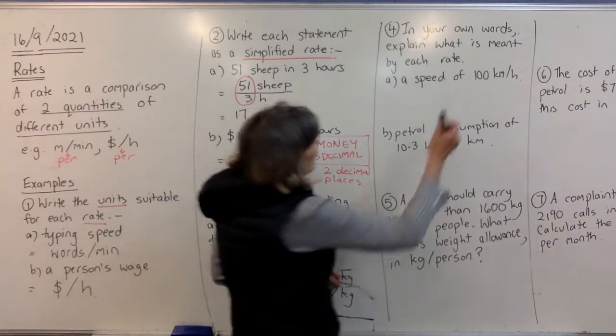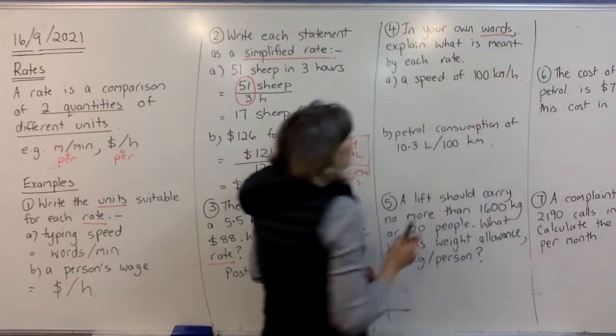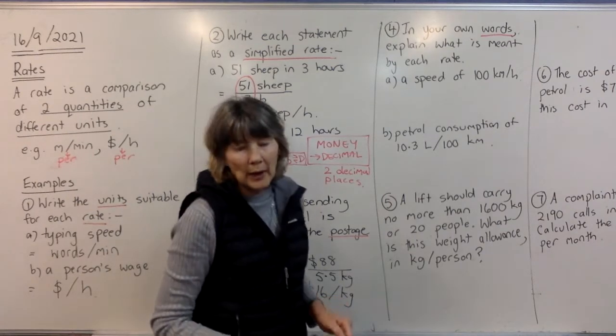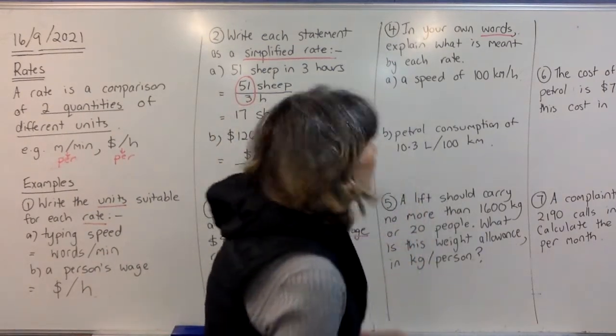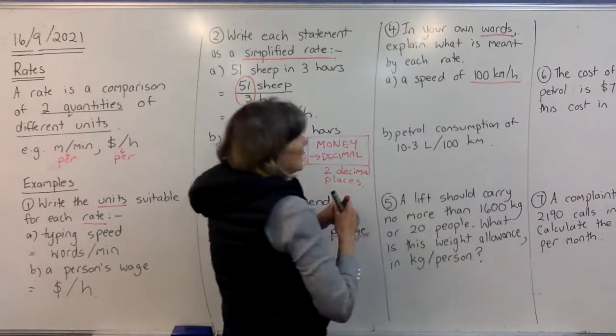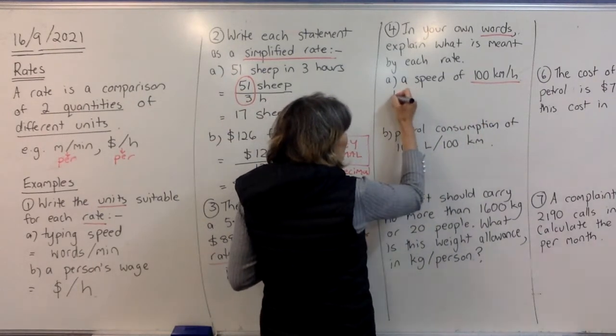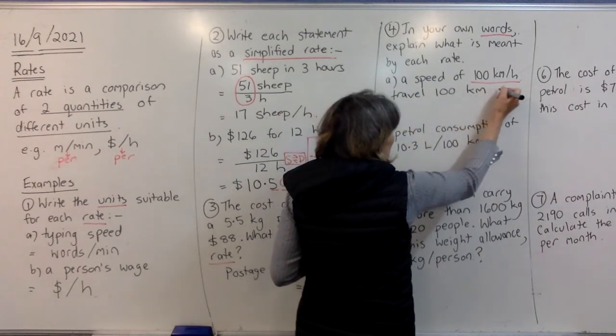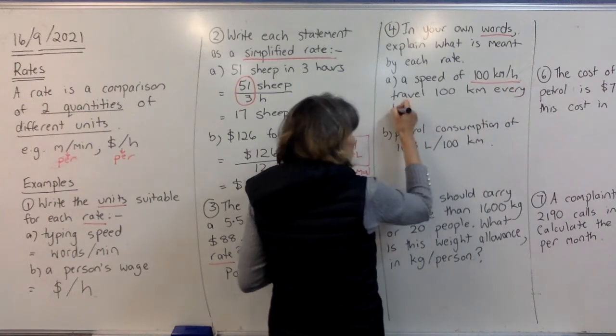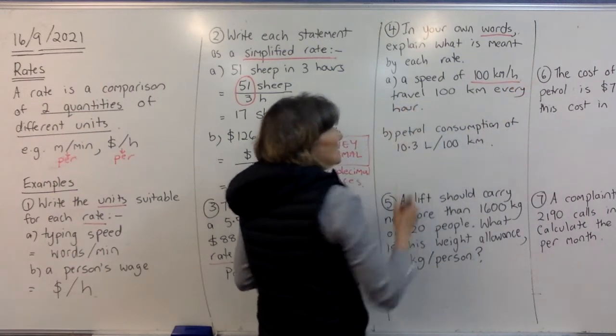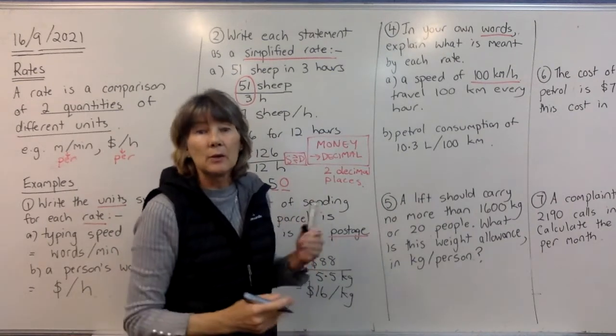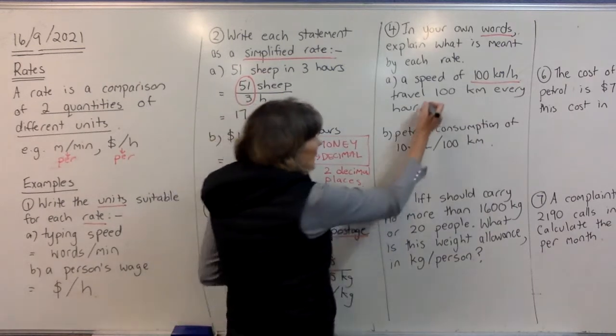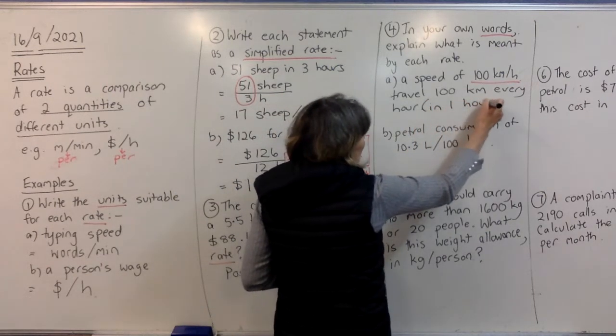All right, looking at the next question, we're using words. In your own words, explain what is meant by each rate. Okay, so if we have 100 kilometres per hour, what they really mean is that you travel 100 kilometres every hour. That's what it means. Okay, so you go 100 kilometres in one hour, or 100 kilometres every hour. You can say in one hour, if you like.